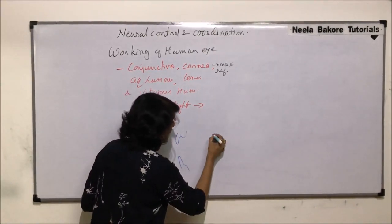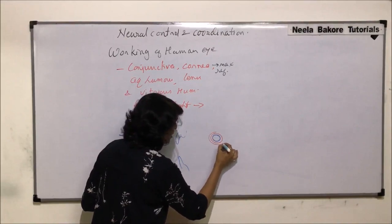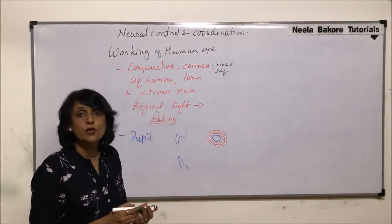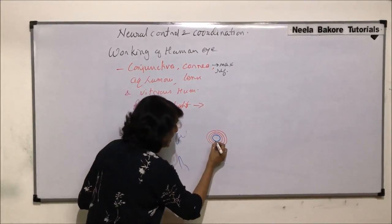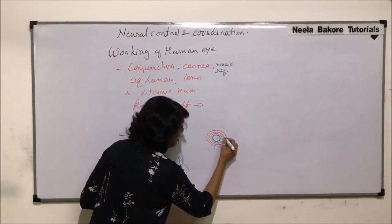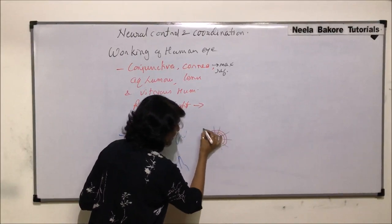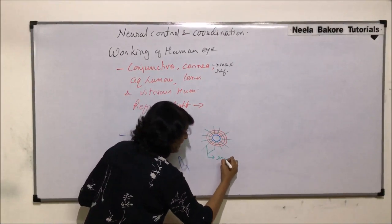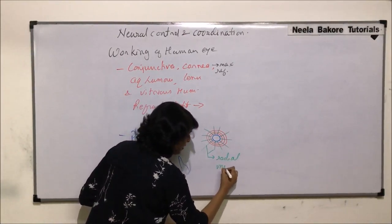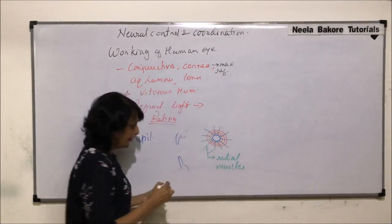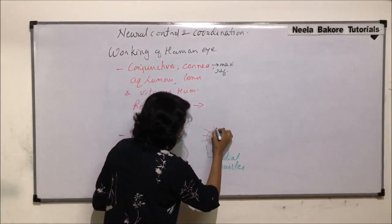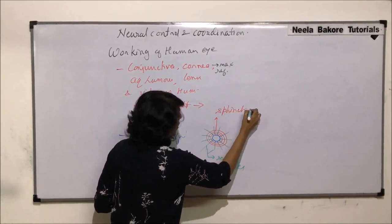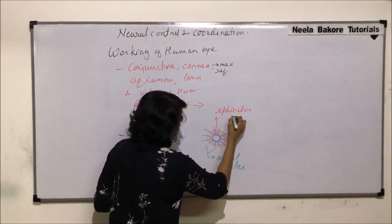Some muscles in the iris are circular muscles called sphincter muscles, and there are other muscles called dilator muscles, which are radial muscles. The radial muscles are arranged radially — the ones drawn in green are radial muscles, and the red ones, which are circular, are called the sphincter or circular muscles.